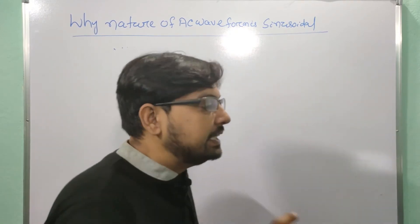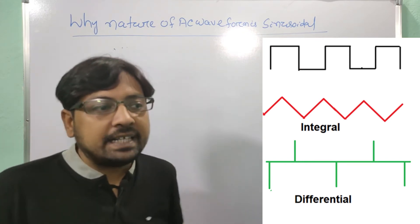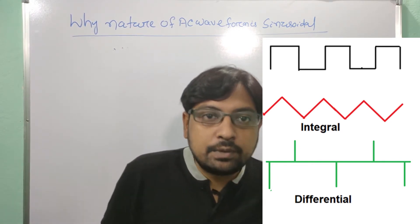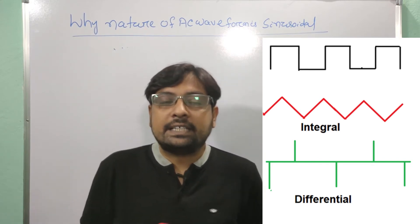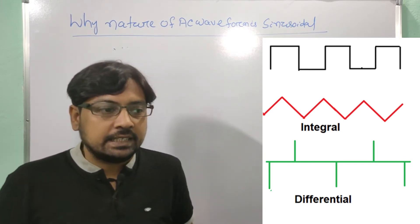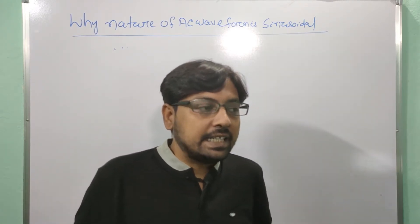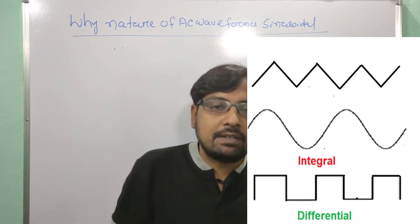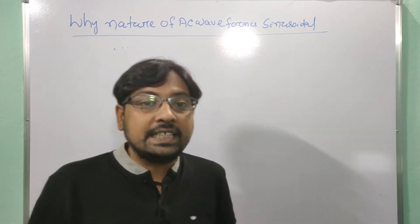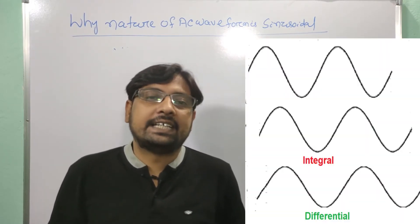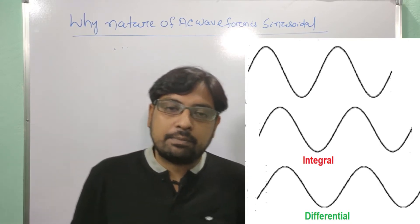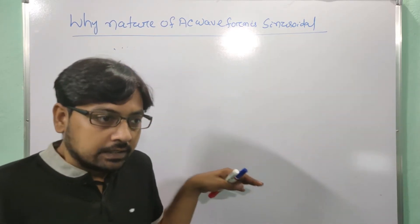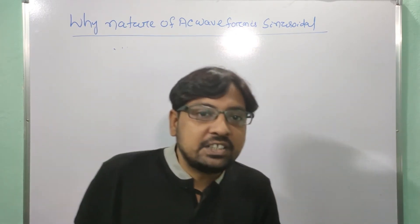Another point is differentiation and integration. If you integrate a square wave, you will get a triangular waveform, and if you differentiate a square wave, you will get a spike. Similarly, if we integrate a triangular waveform, we get a sine wave, and if you differentiate a triangular waveform, you will get a square wave. But if you differentiate a sine waveform, you will get a sine waveform, and if you integrate a sine waveform, you will also get a sine waveform.